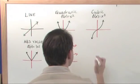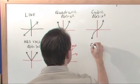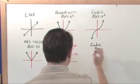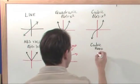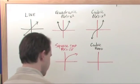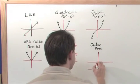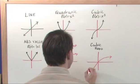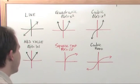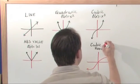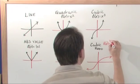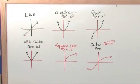The final one I want to talk about is the cube root. That one is going to look like this — an S shape, like this. And that would be something like f(x) = ∛x, the cube root of x.